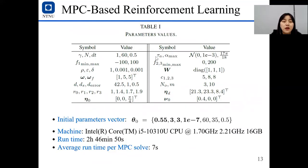And this is the parameter values for simulations. And the initial parameter vector is chosen based on MPC. This is the machine we use, and the training time is 2 hours and 40 minutes. And the average solving time for MPC is 7 milliseconds, which is fairly enough for autonomous surface vehicles.